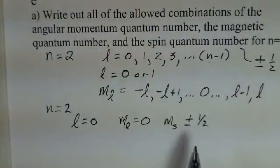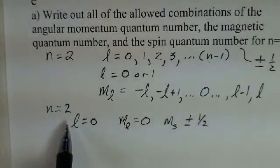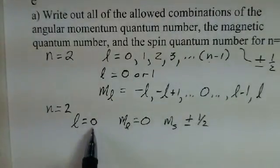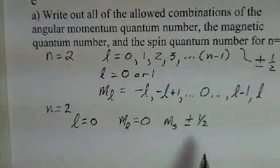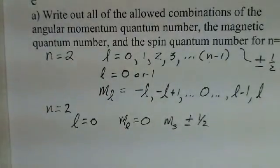And according to the Pauli exclusion principle, we can then have two electrons with this n equals 2, L equals 0, m sub l equals 0. Each electron has to have a different set of these four quantum numbers as our Pauli exclusion principle.